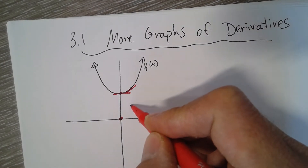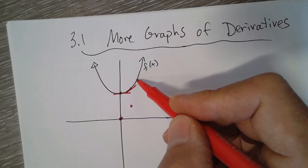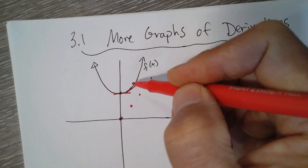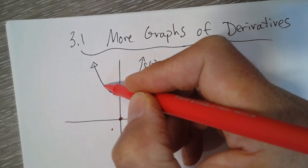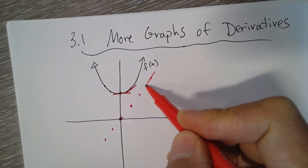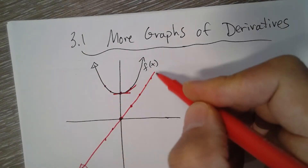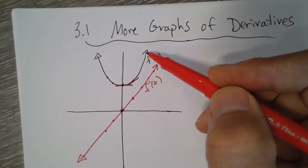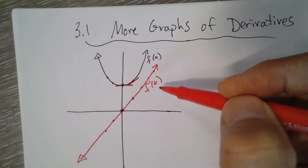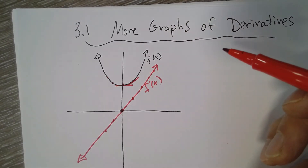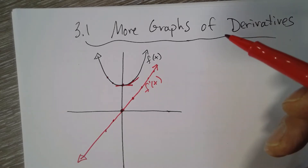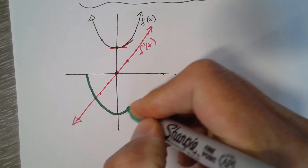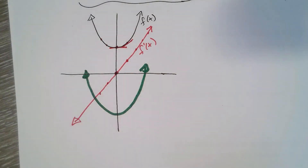To the right, the slope is about 1 here, maybe 2, 3, 4, and it keeps going up. To the left it's about negative 1, negative 2, and so on. You can see that the graph of f prime of x is a line, which it should be — because the derivative of a quadratic is always going to be a linear function. The degree goes down by 1.